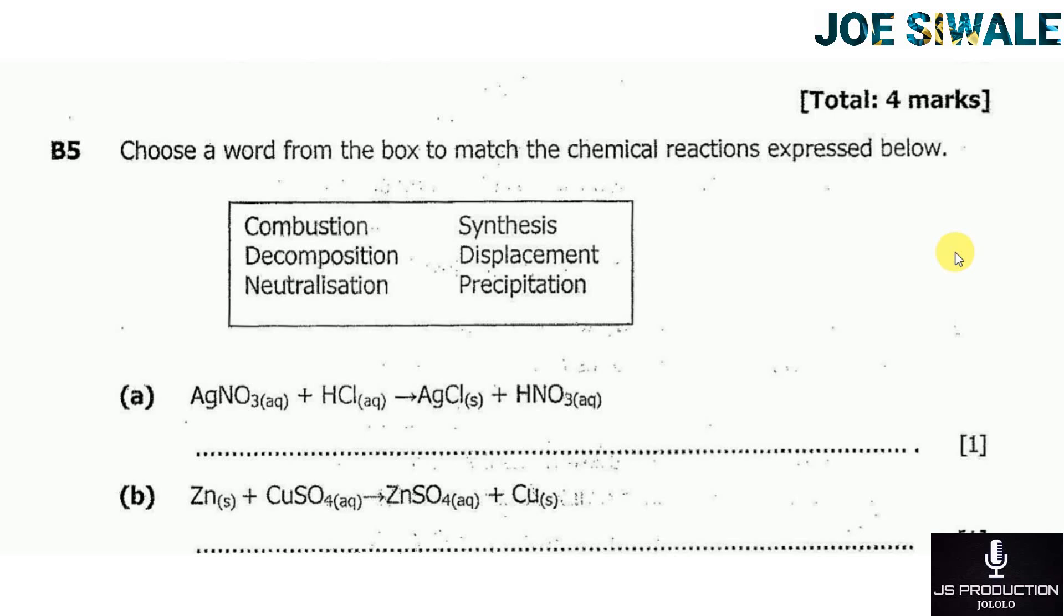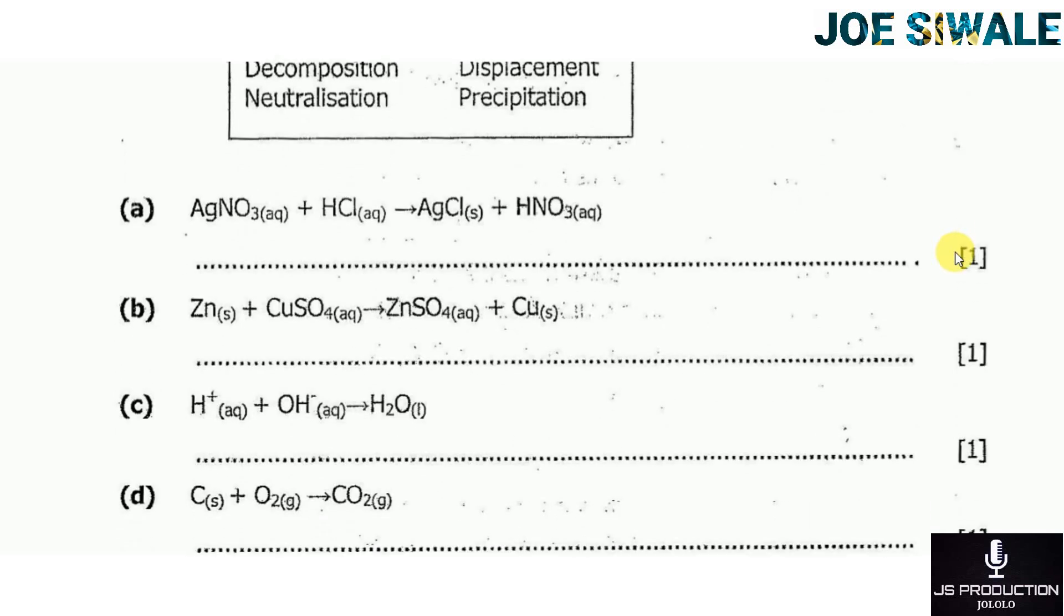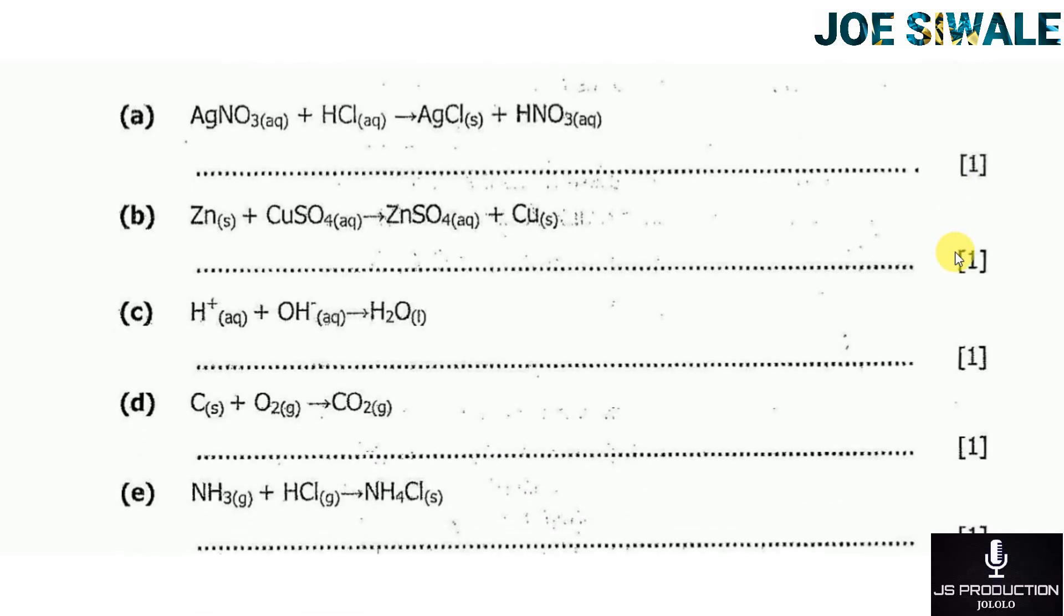Then C, I have hydrogen ion plus hydroxide ion. This produces water. This type of reaction is a synthesis reaction. Then D, carbon plus oxygen. That produces carbon dioxide. This type of reaction is combustion.